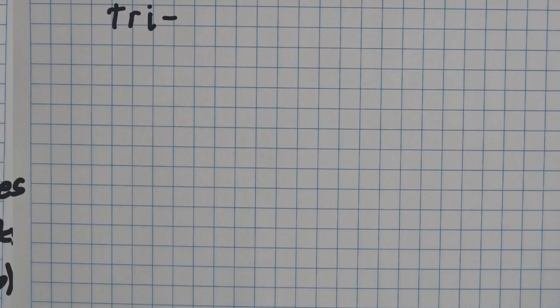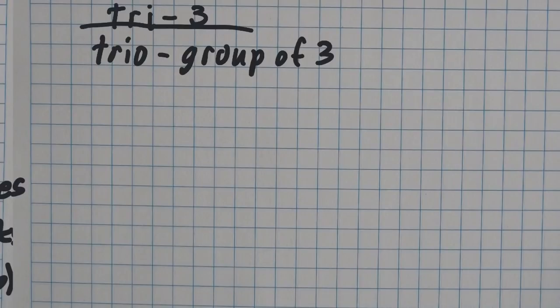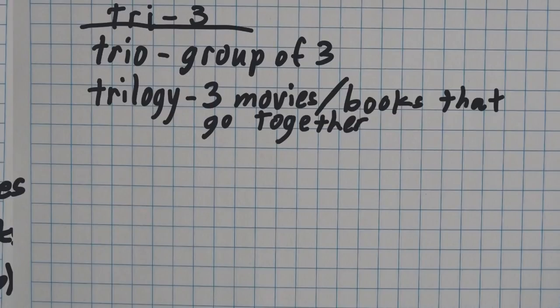Now let's look at some tri words, which means three. First, a trio is simply a group of three. A trilogy is usually three movies or books that go together. For example, there's Toy Story 1, Toy Story 2, and Toy Story 3. That is a trilogy of movies.